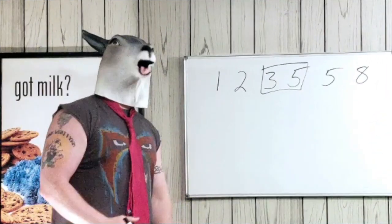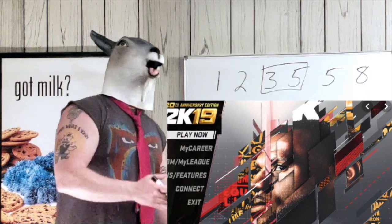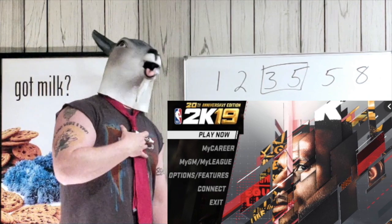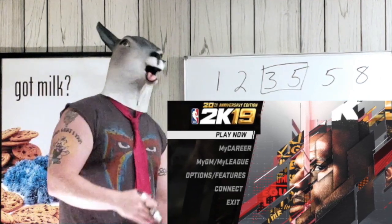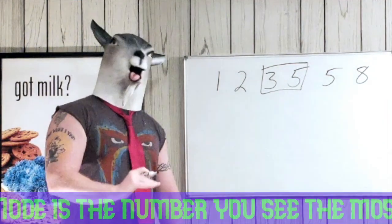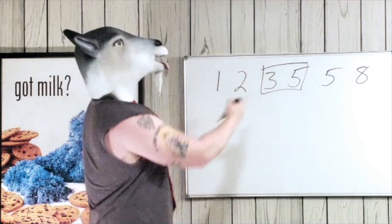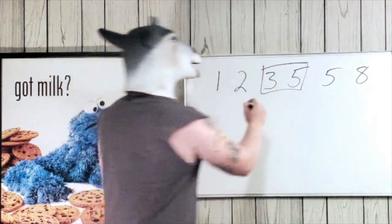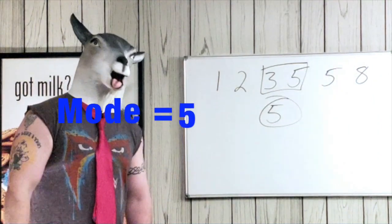Now what's left is mode. Remember how you find it — what's your favorite game mode? You playing 2K? What's your favorite game mode? Mine is My Court, so I play on My Court all the time — it's the one I go to the most, the one I see the most. So which number do you see the most? Looking at these numbers, the only one there more than once is the number 5. So boom — 5 is our mode.